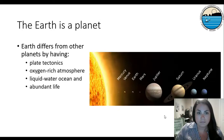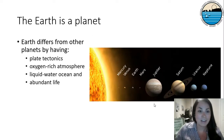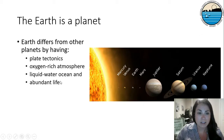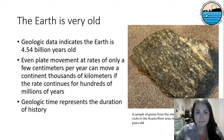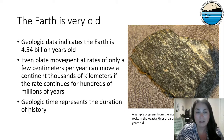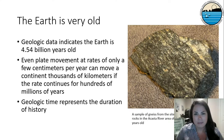The Earth is a planet, and we have different processes than other planets within our solar system, like plate tectonics. We also have an oxygen-rich atmosphere, liquid water oceans, and abundant life. The Earth is very, very old — geologic data indicates that the Earth is 4.54 billion years old. Geologic time can be difficult to conceptualize, so we're going to talk about how we can try to wrap our heads around what 4.54 billion years actually means.